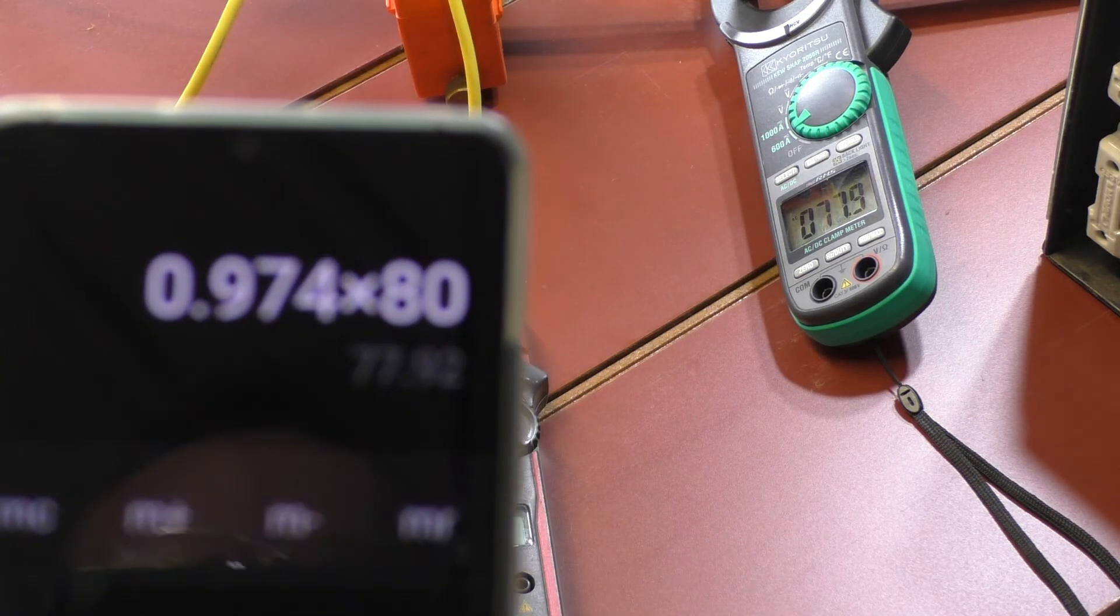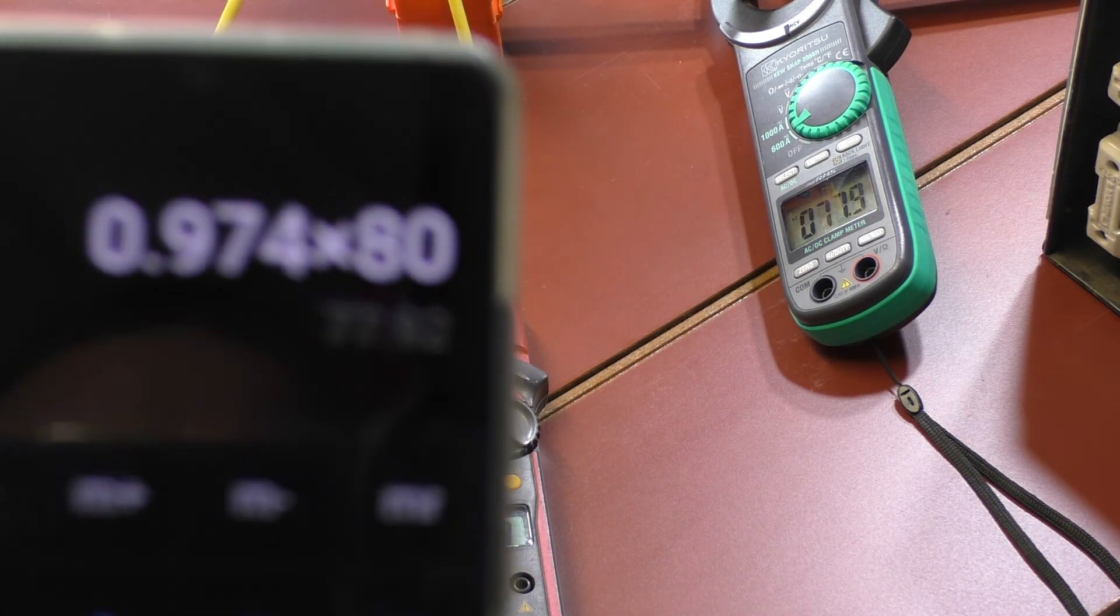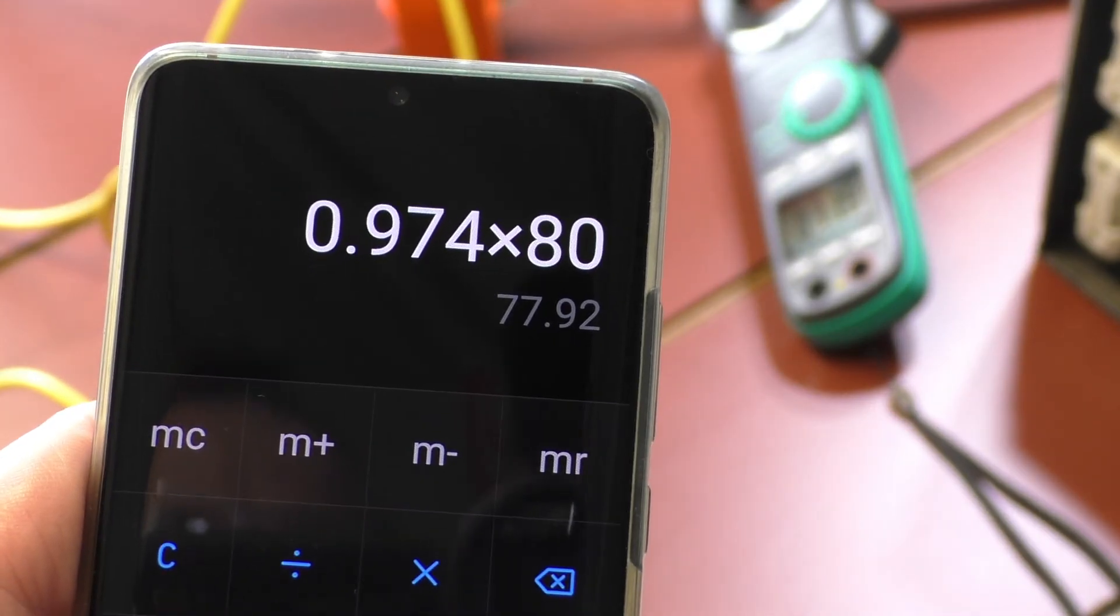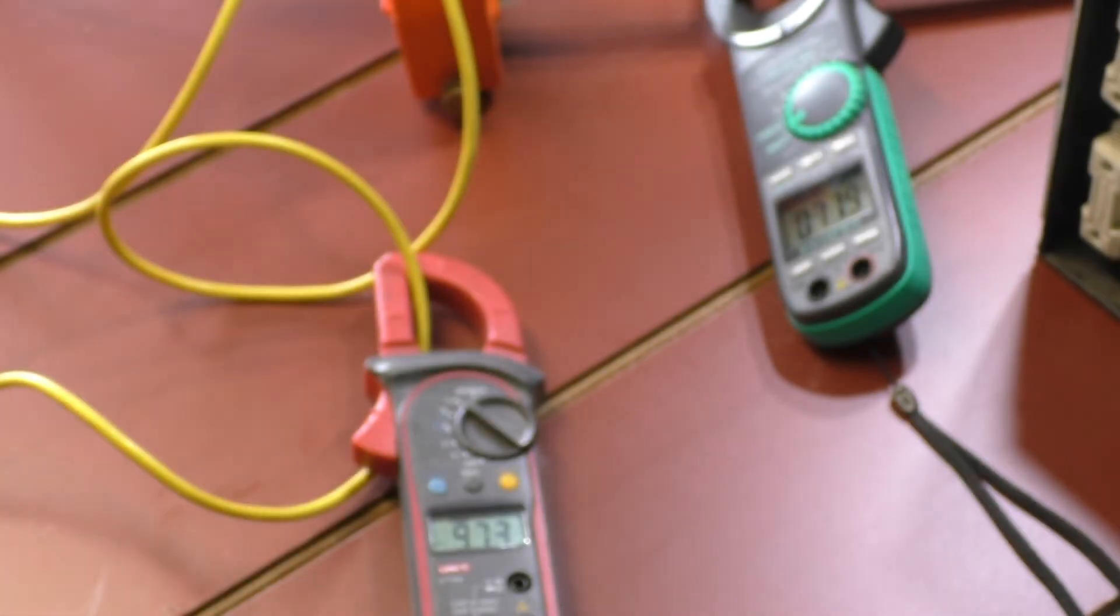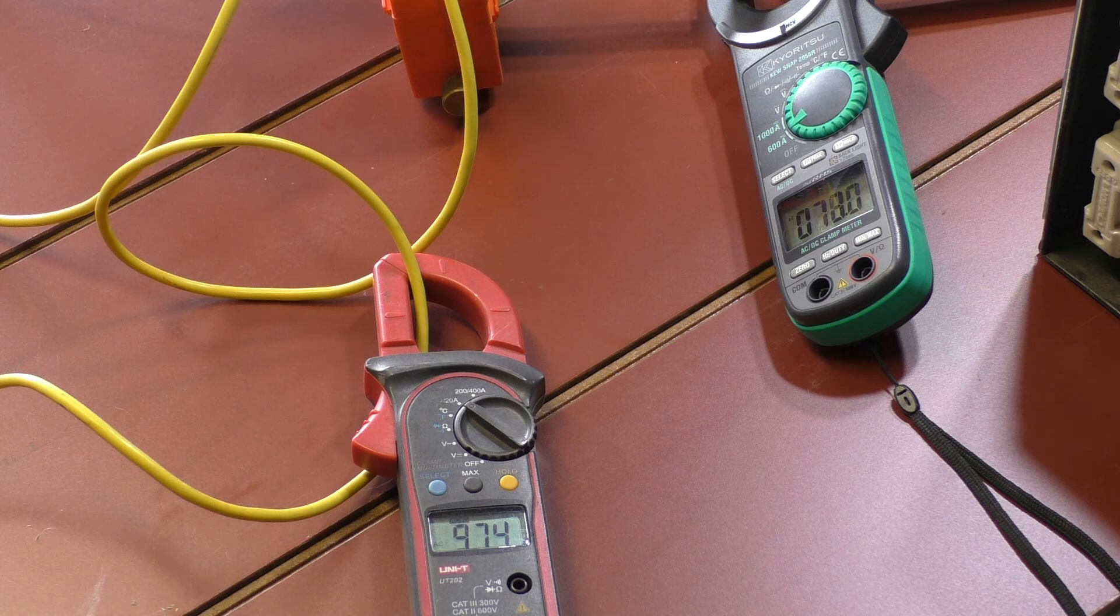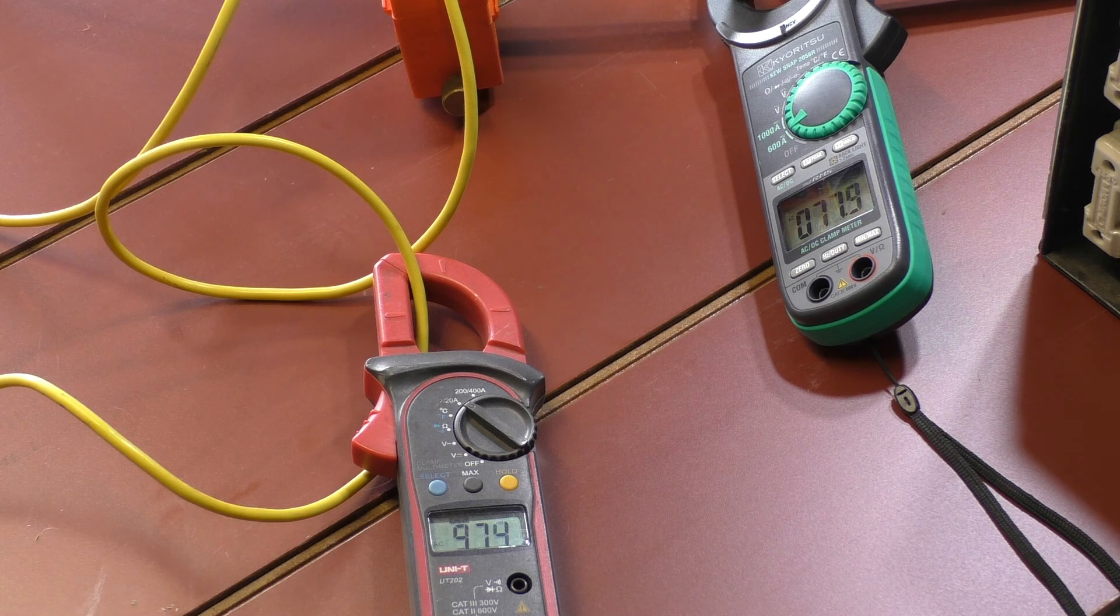So I've got, I don't know if you can see that, there you go, 77.92. I've got 77.9, 78 on the primary side.